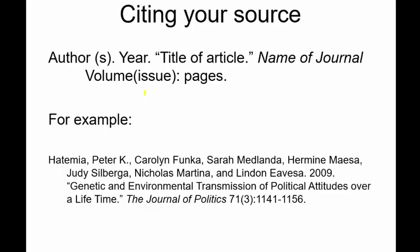For citing your academic journal source, the format is always the same: the author's name — lead author first, last name first — period. The year it was published, period. Then the title of the article in quotation marks, period. Then, most importantly, the name of the journal in italics, followed by the volume, issue, and page numbers of that article.